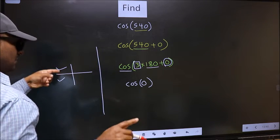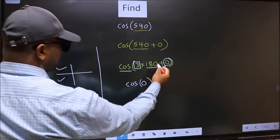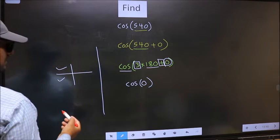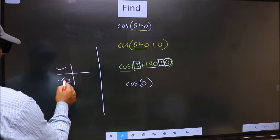So now to select the quadrant, we should look at this symbol. Here we have plus. That means the angle lies in the third quadrant.